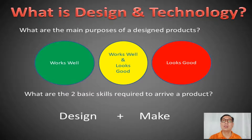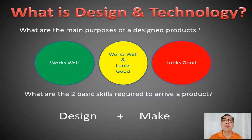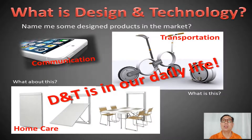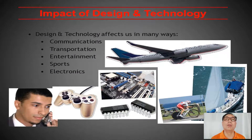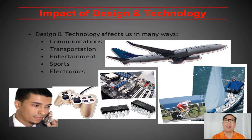So what are the two basic skills? We need them to be design and make. In design technology, we see this every single day — they are part and parcel of our lives. D&T is in every aspect of our daily lives. Every man-made thing is designed. We can see them in our technology, transport, communication, entertainment, sports, and electronics. They are virtually everywhere — every single part of our life involves things that are actually designed.